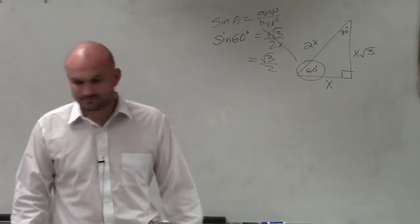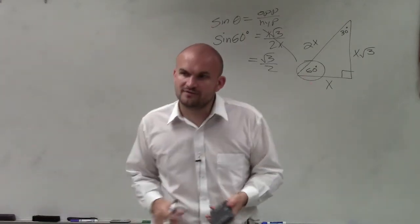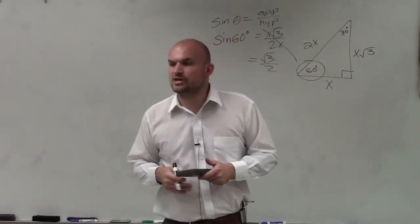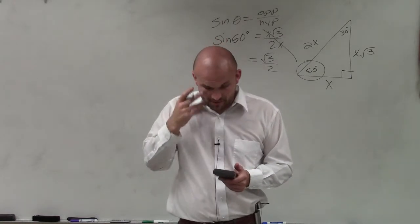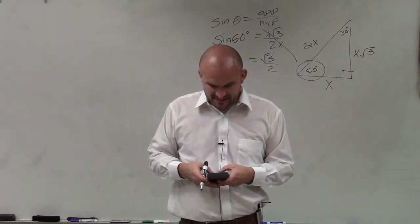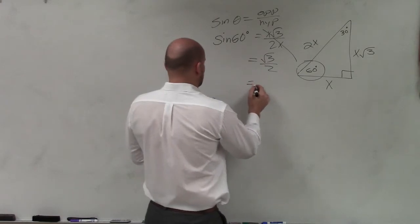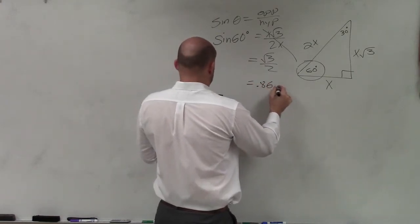Done. Final answer. Now, also to check it with your calculator to find the decimal approximation. Jared, if you want to move up here, I'll be more than happy to have you come up here. Sine of 60 degrees equals 0.866.